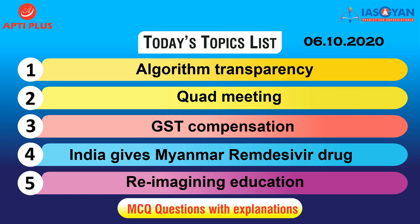Let us get started with the topics first. These are the list of topics for the day. Today is 6th of October. The first topic is algorithm transparency. The second topic is Quad meeting. Third, the GST compensation, the recent meeting which was held. The fourth topic is India gives Myanmar the Remdesivir drug, which is an important news regarding India and Myanmar relationship. And the last topic is reimagining the education system. Apart from all these topics, I will be discussing some MCQ questions at the end of this video and the explanation of yesterday's questions.